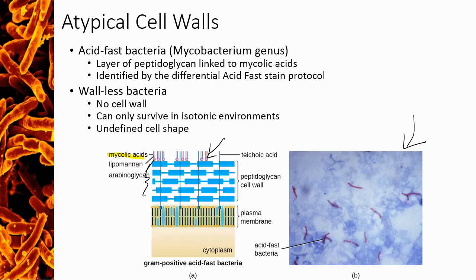Some bacteria have no cell wall at all. These have an undefined shape because the cell wall is what gives structure, and they must live in an isotonic environment. Most cell wall-less bacteria actually live inside the cytoplasm of other eukaryotic cells — we call these obligate intracellular organisms.